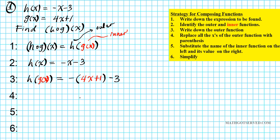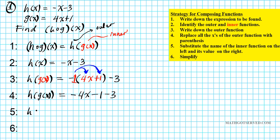Now step six is to simplify the right side of our composite function. So h of g of x — we're going to distribute negative 1. Anytime you're distributing negative 1, proceed with caution, because it's easy to forget to distribute the negative sign to every term in the parenthesis. Distribution yields negative 4x minus 1, then we bring down the minus 3. Combining those two constants gives negative 4. So our composite function h composed with g of x is equal to negative 4x minus 4.